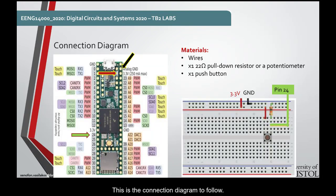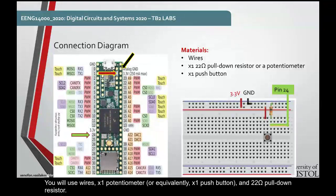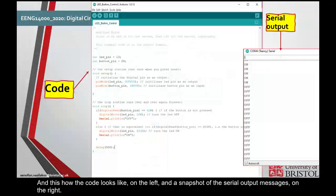This is the connection diagram to follow. You will use wires, one potentiometer, or equivalently one push button, and a 22 ohm pull-down resistor. And this is how the code looks like on the left, and a snapshot of the serial output messages on the right. Let us first start with the potentiometer.